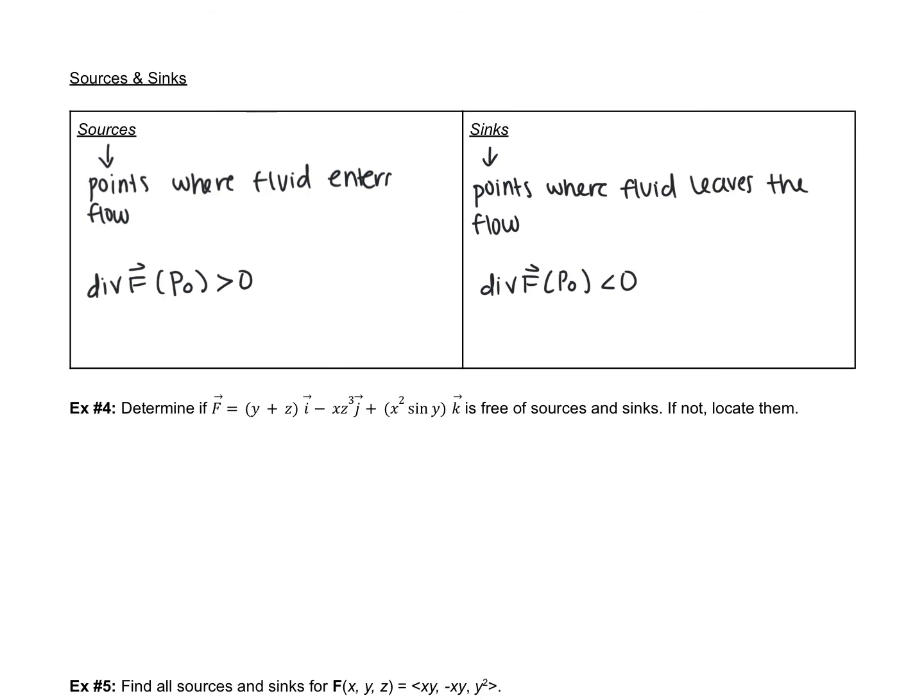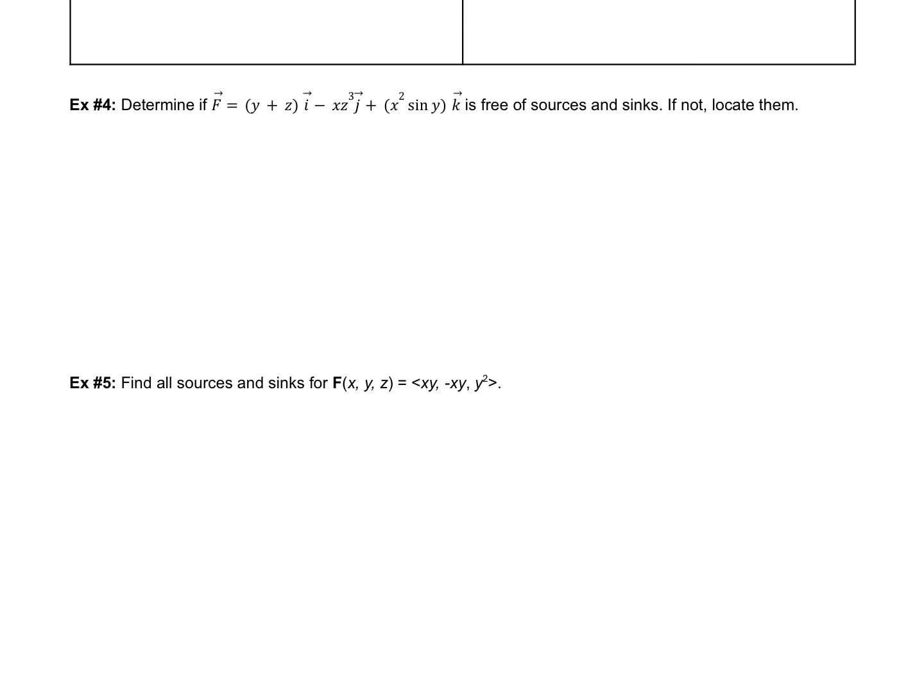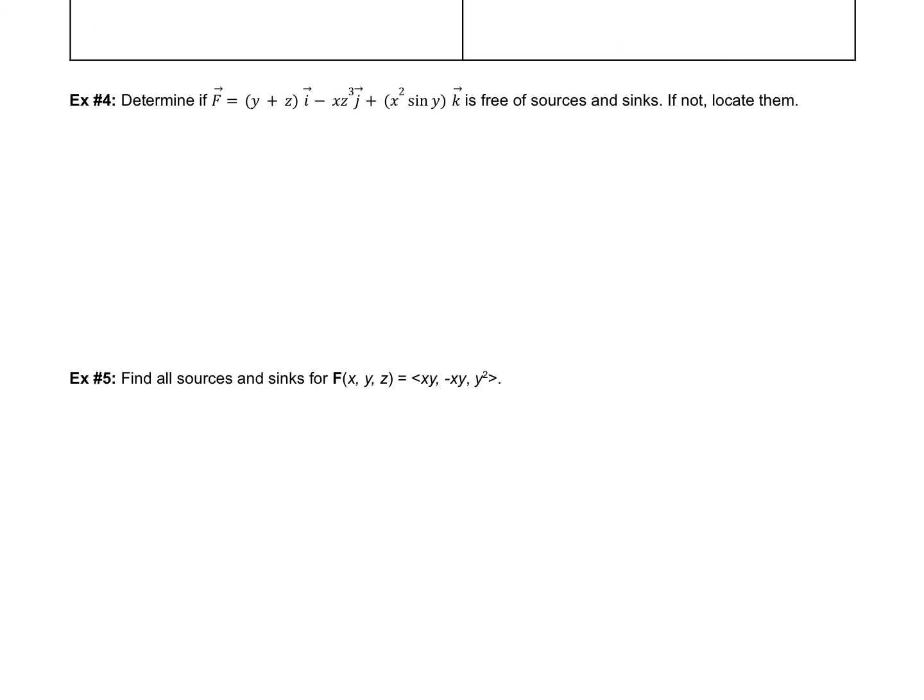So we're going to end with two quick examples. Example 4. Determine if this vector field is free of sources and sinks. If not, locate them. So we're going to have to start by finding the divergence of F. So we're going to take the partials with respect to x, y, and z. So our divergence of F is just plain old 0. So never going to be greater than 0, never going to be less than 0. So what that tells us is that there are no sources and no sinks.